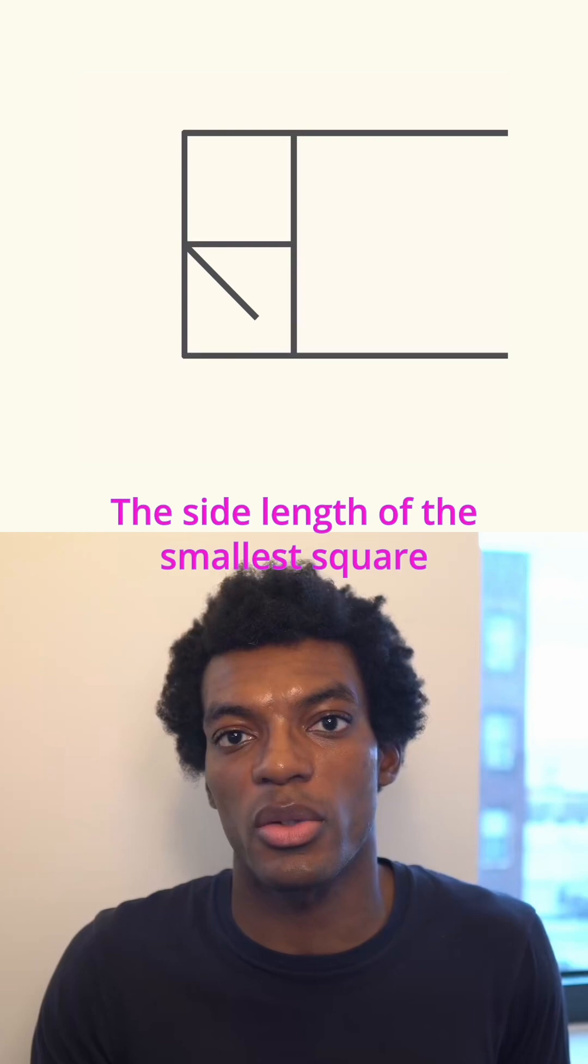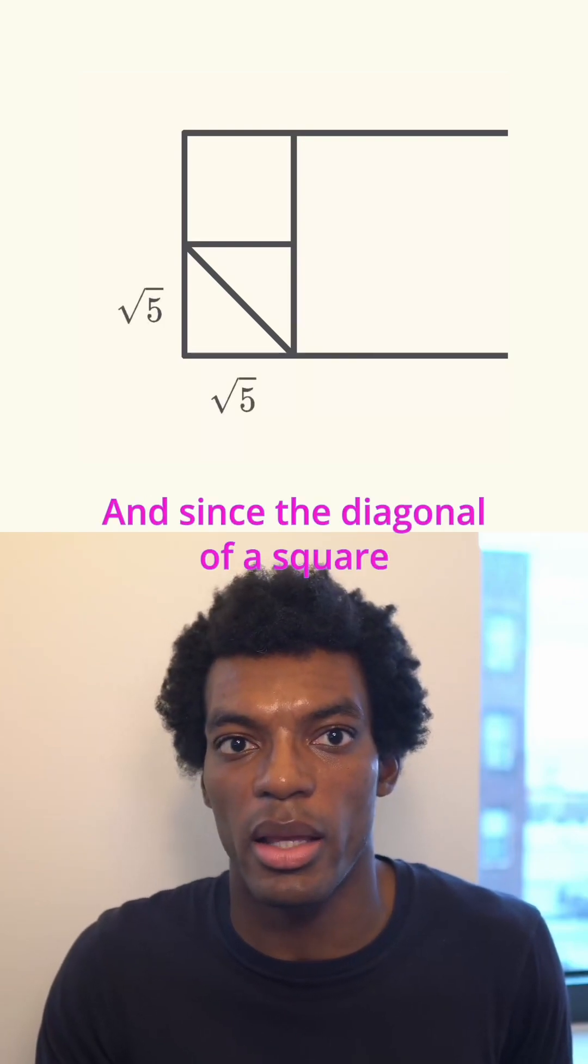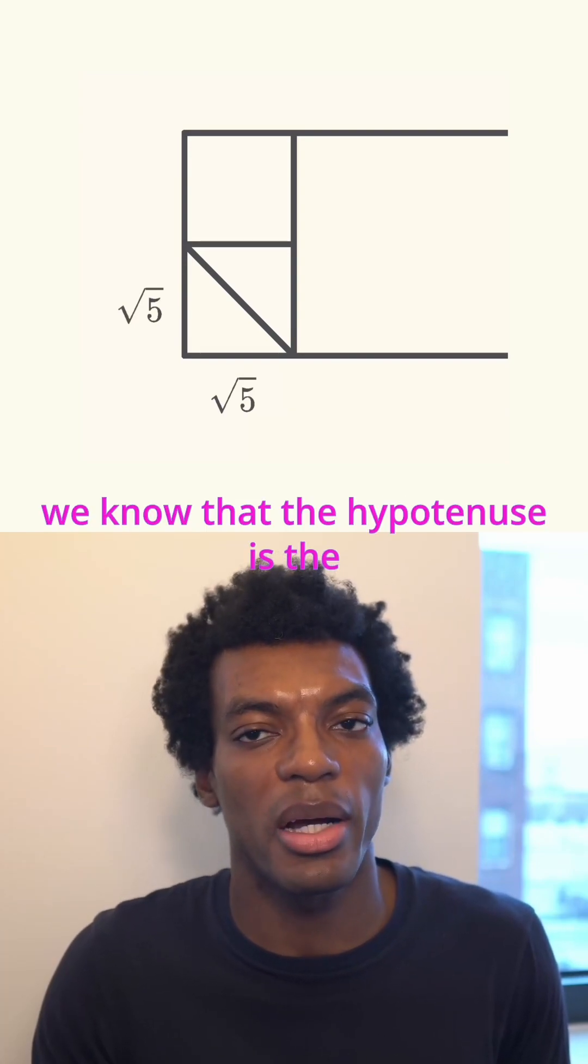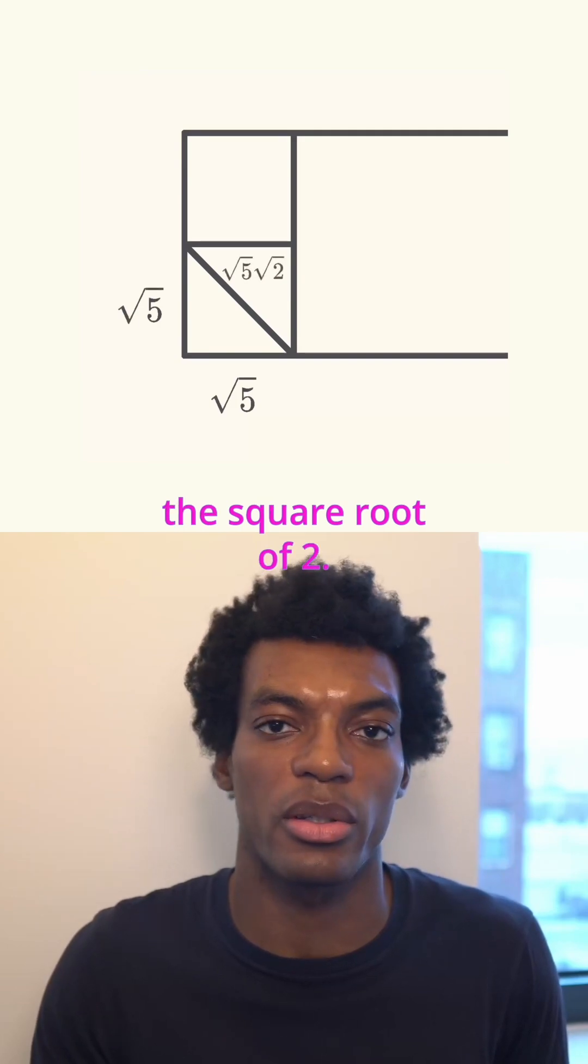The side length of the smallest square is the square root of 5, and since the diagonal of a square forms a 45-45-90 triangle, we know that the hypotenuse is the square root of 5 times the square root of 2.